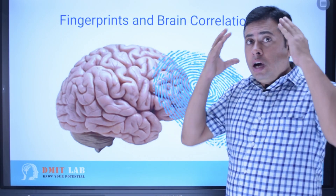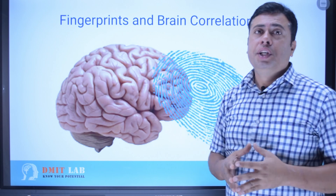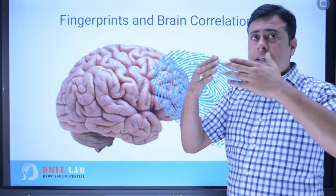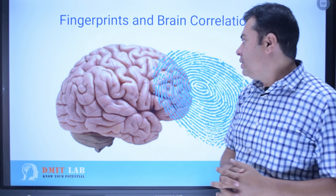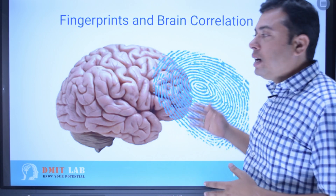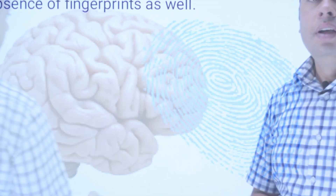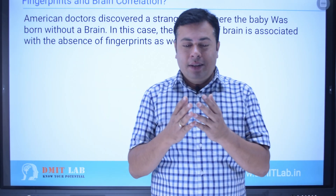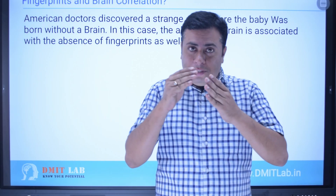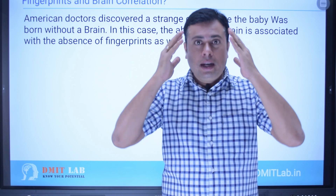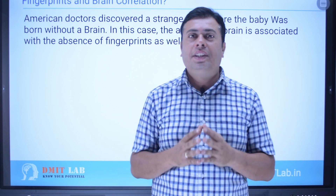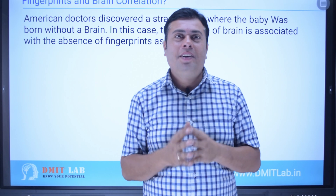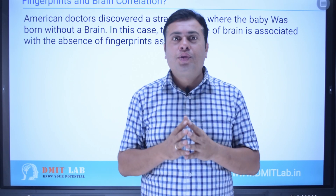Let us start — we will understand how fingerprints are going to be developed and how the brain is going to be developed. Based on that we can understand the correlation between fingerprints and the brain. Now, who first got to know that fingerprints and the brain are correlated? There is a very interesting story behind this.